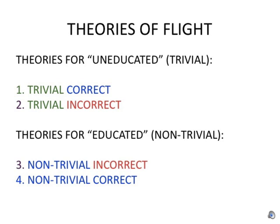There are many theories of flight, and they can be divided into four groups with different combinations of trivial and correct, including negations. For so-called uneducated, we have trivial theories which may be correct or incorrect.